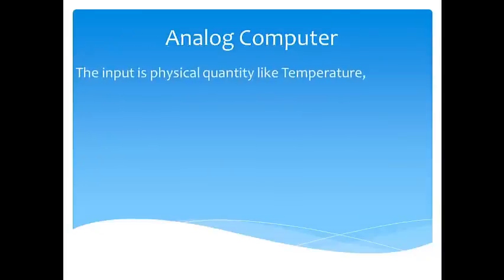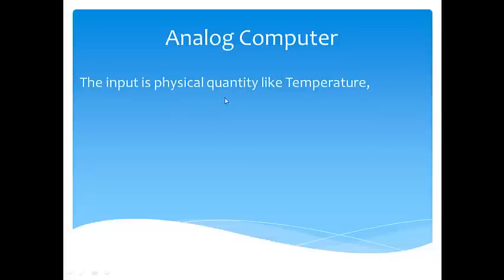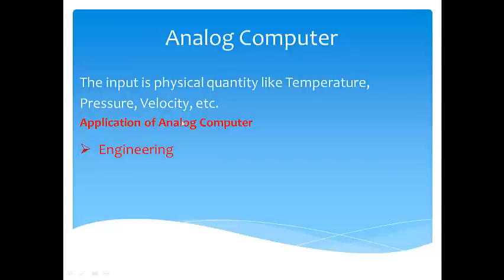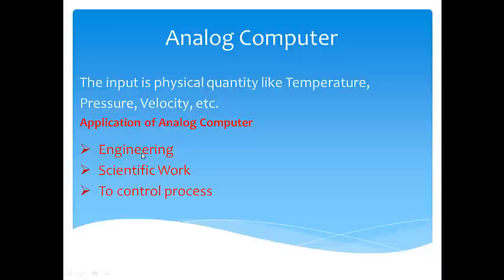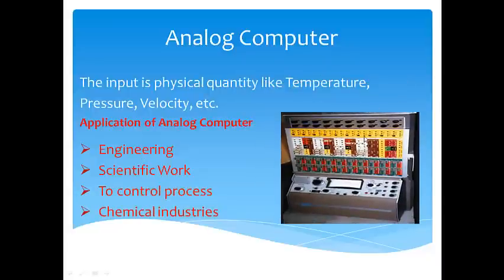An analog computer takes input as physical quantities like temperature, pressure, velocity, etc. The analog computer works with physical quantities — for example, how much temperature, how much pressure, and so on. Analog computers are used in engineering purposes, scientific works, controlled processes, and chemical industries. As shown in the diagram, this computer works on how much quantity — for instance, when temperature goes beyond 30 degrees Celsius, or in chemical industries, or for scientific purposes. The analog computer works on physical quantities.